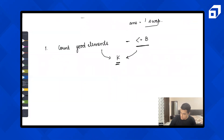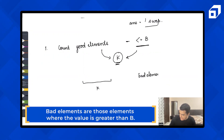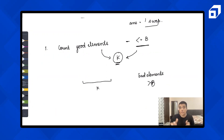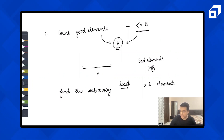First we count good elements — let the count be k. Then we have to find the subarray of size k that contains the least number of bad elements, where bad elements are those with value greater than b. The number of bad elements in the best subarray equals the minimum number of swaps needed, since each bad element must be replaced with a good element from outside the window.